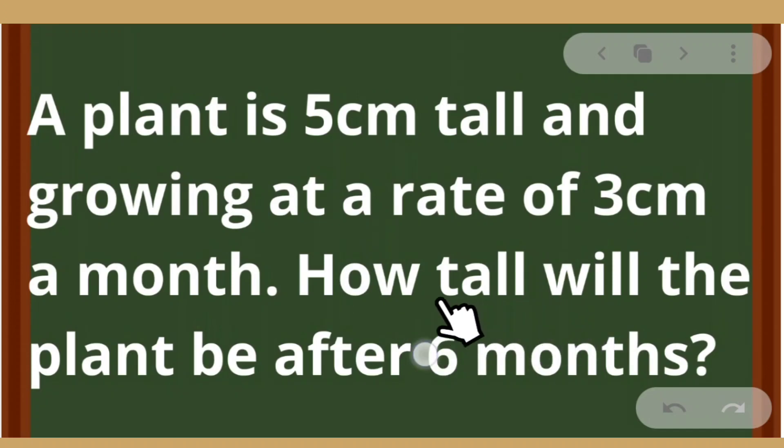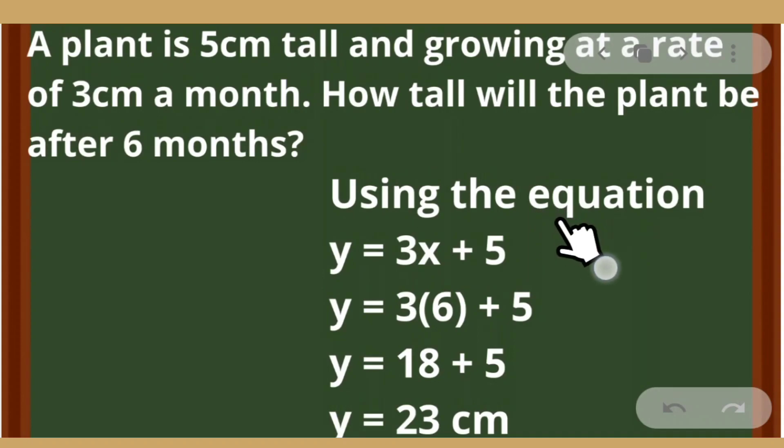How tall will the plant be after 6 months? After 6 months, we are going to substitute in the equation that we have made, y is equal to 3x plus 5. Since it asks for the height of the plant after 6 months, we are going to substitute 6 to x since x is the number of months. So we have y is equal to 3 times 6 plus 5. 3 times 6 is 18 plus 5, so we have 23 cm.